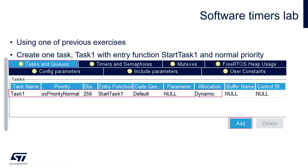The next step would be adding some tasks. We will use a single task in this project. Within tasks and queues of the FreeRTOS configuration please go to the tasks section and press Add to add a new task. These task parameters should be: name task1, priority OS priority normal, stack size 256 bytes, entry function name startTask1. The rest of the parameters we keep in default state.